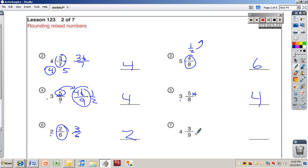4 and 3 ninths. Is 3 ninths bigger or smaller than a half? Smaller. It's smaller than a half, right? So what am I going to round the 4 to? 4. Just keep it at a 4.